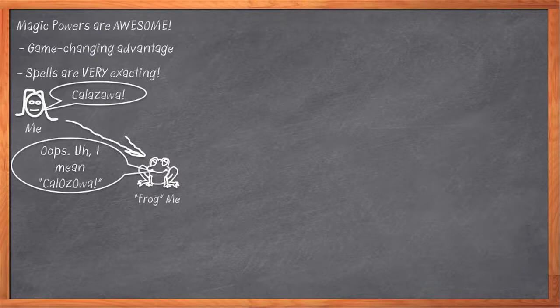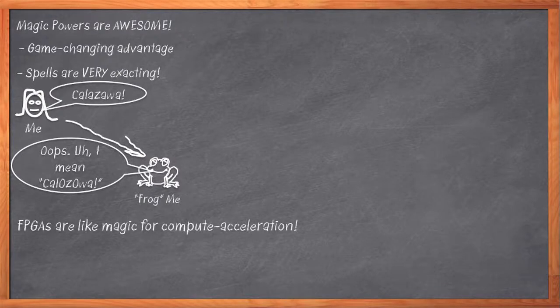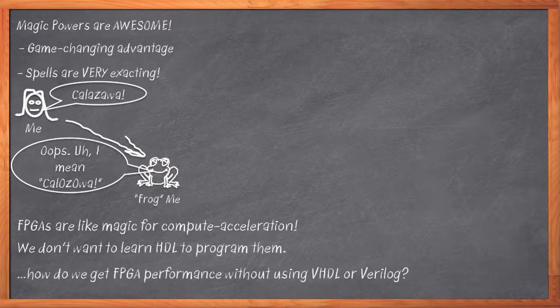And sometimes if you said that spell not exactly right, you could accidentally make something really terrible happen. FPGAs can be a little bit like that. FPGAs are capable of amazing things, particularly when it comes to accelerating computation. They can zap your algorithm up to supernatural speeds with a seemingly magical level of power efficiency. However, the incantations to unlock that spell have to be written in an ancient and cryptic tongue — we're talking about VHDL and Verilog. Nobody wants to have to learn those hardware description languages in order to accelerate their algorithm to miraculous speeds.